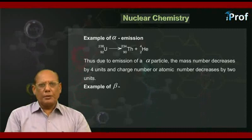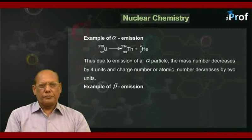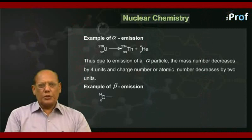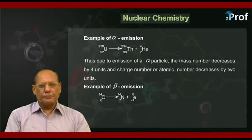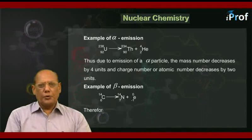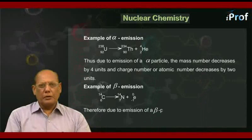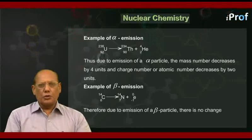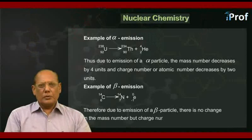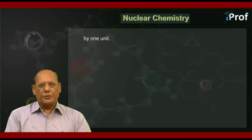Example of beta emission. Carbon-6-14 changing into nitrogen-7-14 plus e-minus-1-0. Therefore, due to emission of a beta particle, there is no change in the mass number, but charge number or atomic number increases by one unit.